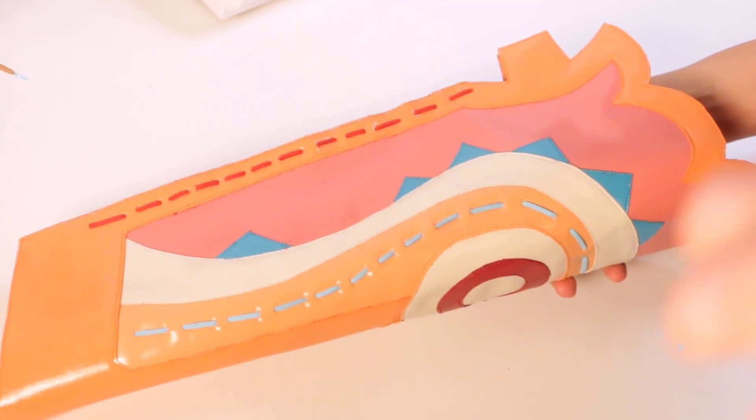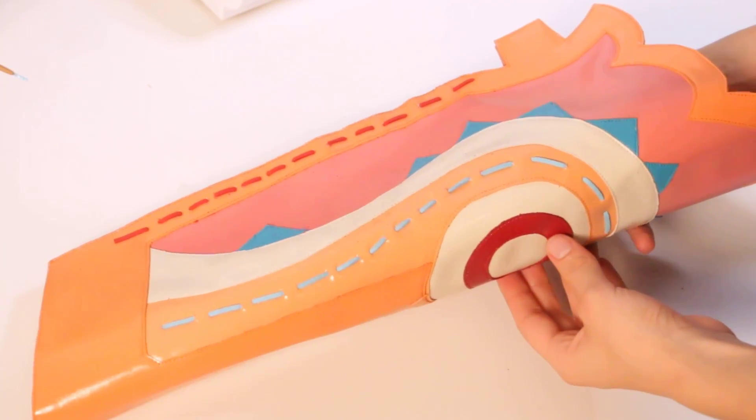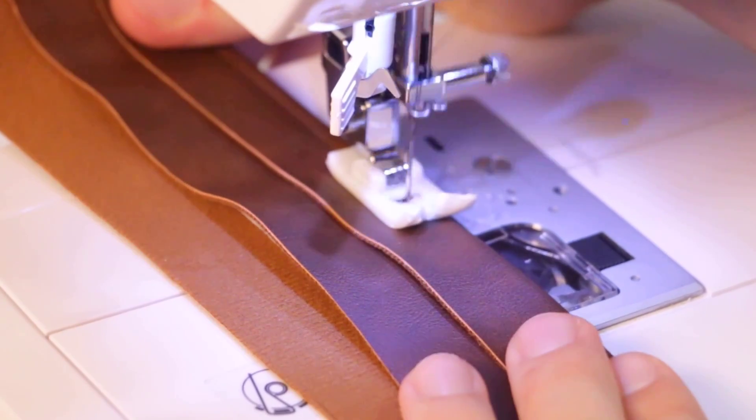Now that the main quiver piece was mostly done, it was time to make a belt for the quiver to hang from. I cut out two strips of leather and one strip of buckram and sewed the edges over to create my basic belt.